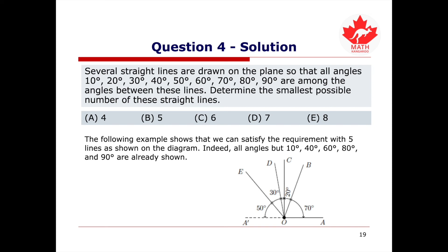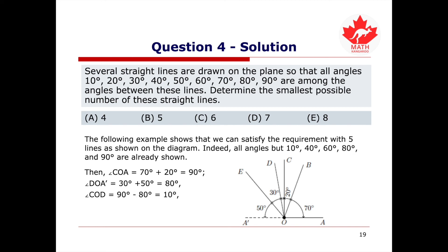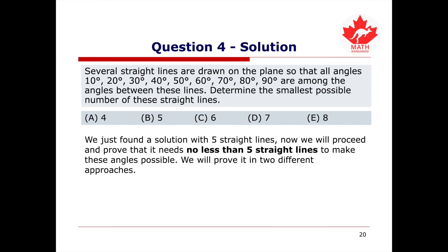All angles but 10, 40, 60, 80, and 90 degrees are already shown. We can find the missing angles using the existing angles: angle COA equals 70 plus 20, which is 90 degrees; angle DOA equals 30 plus 50, or 60 degrees; angle CED equals 90 degrees or 10 degrees; angle CED equals 10 plus 30, or 40 degrees; and angle BOE equals 40 plus 20, or 60 degrees. We have found a solution with 5 straight lines.